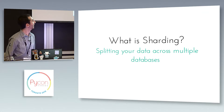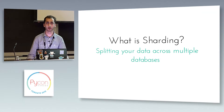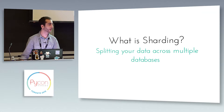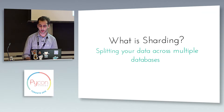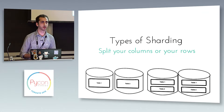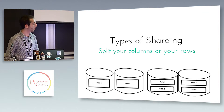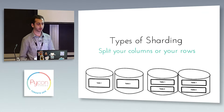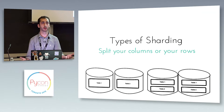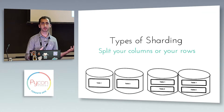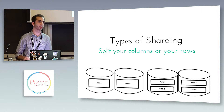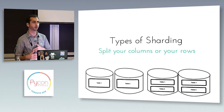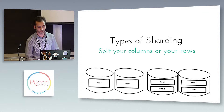So what is sharding? Sharding is splitting your data across multiple databases. There are two main ways you can accomplish this: you can split your columns or your rows. You can either have the same schema across multiple databases and split your rows between them, or you can have different schemas on different databases and have all of the rows in that table in a single place.